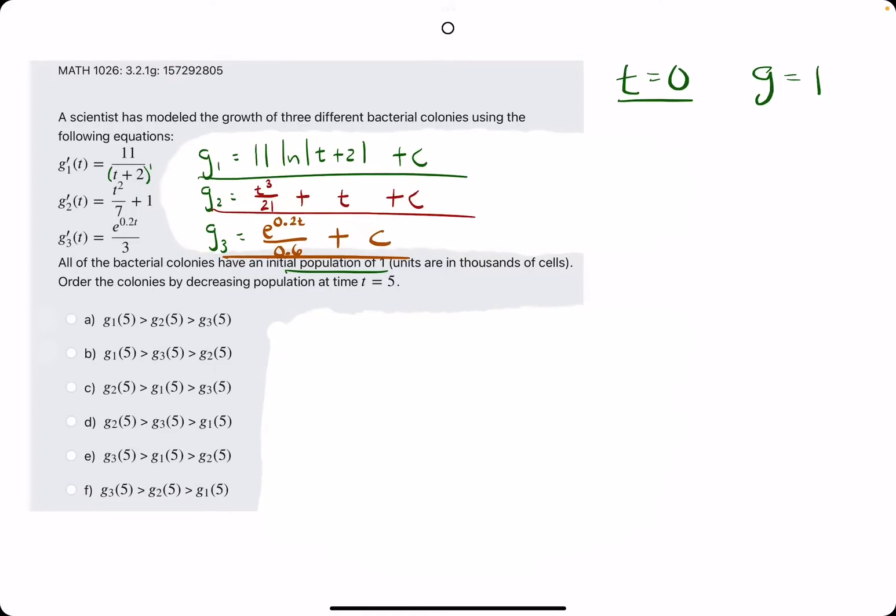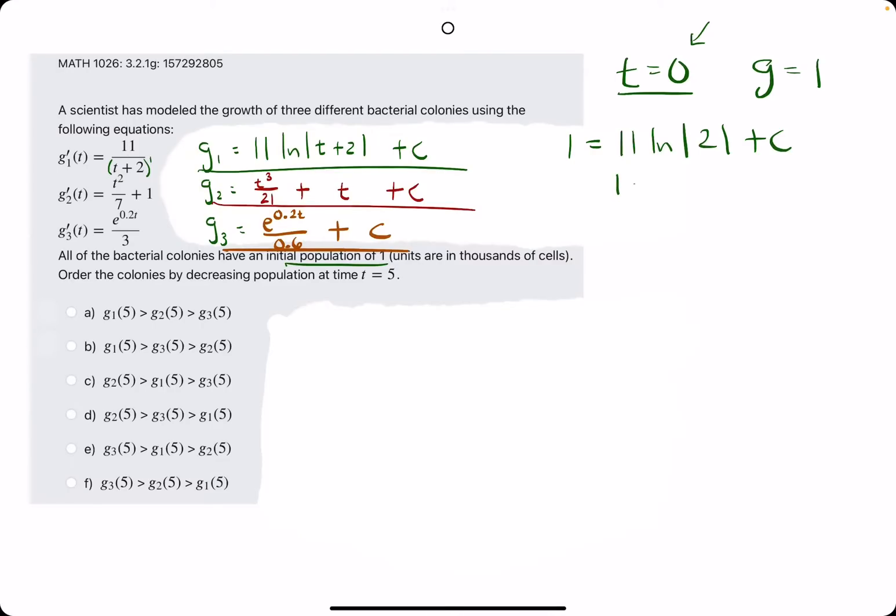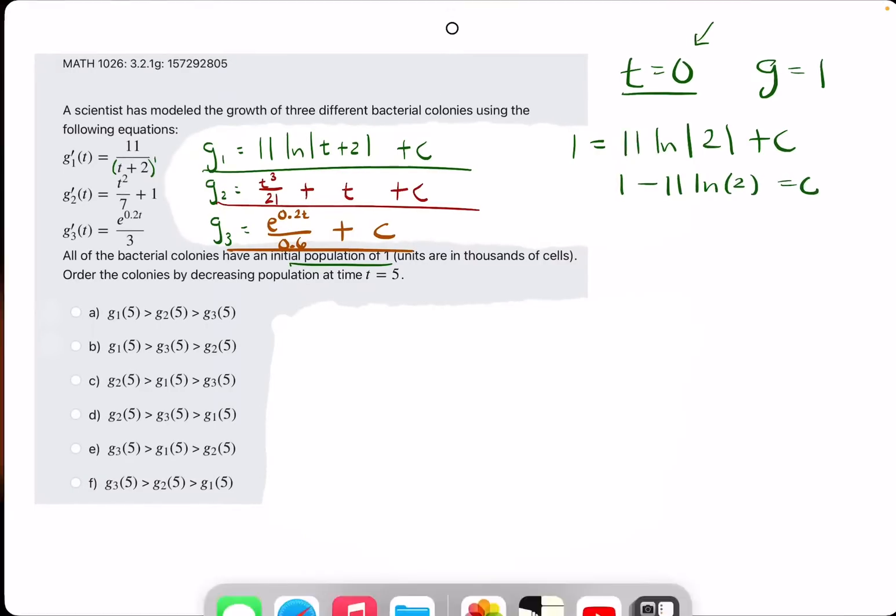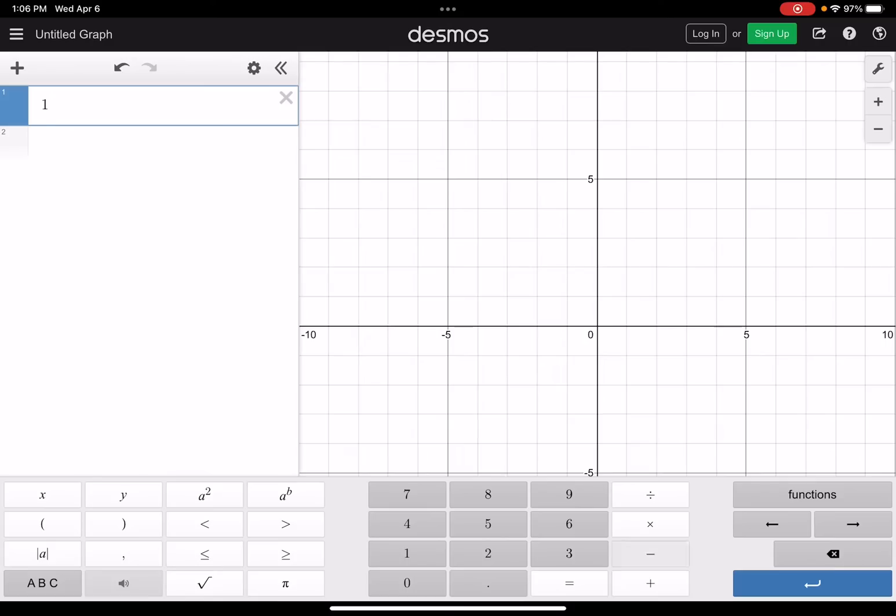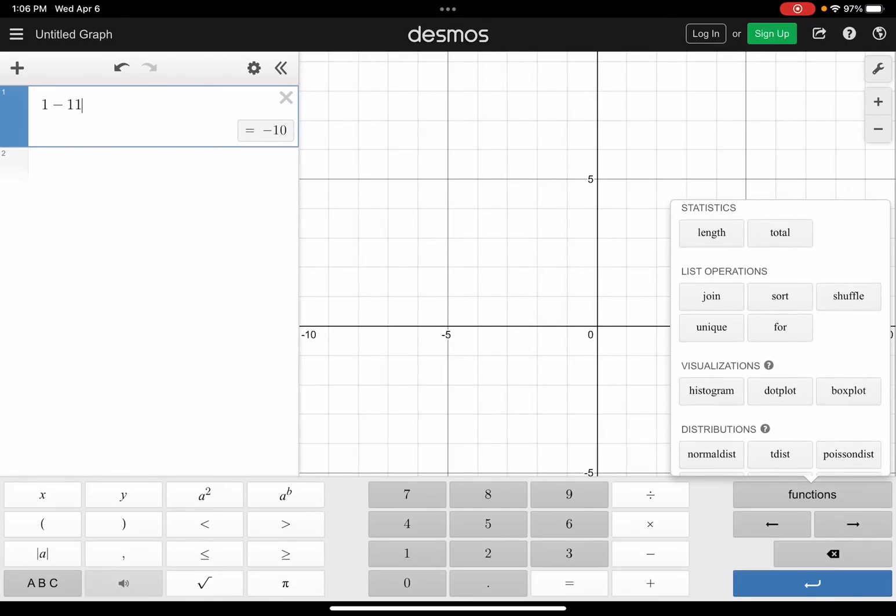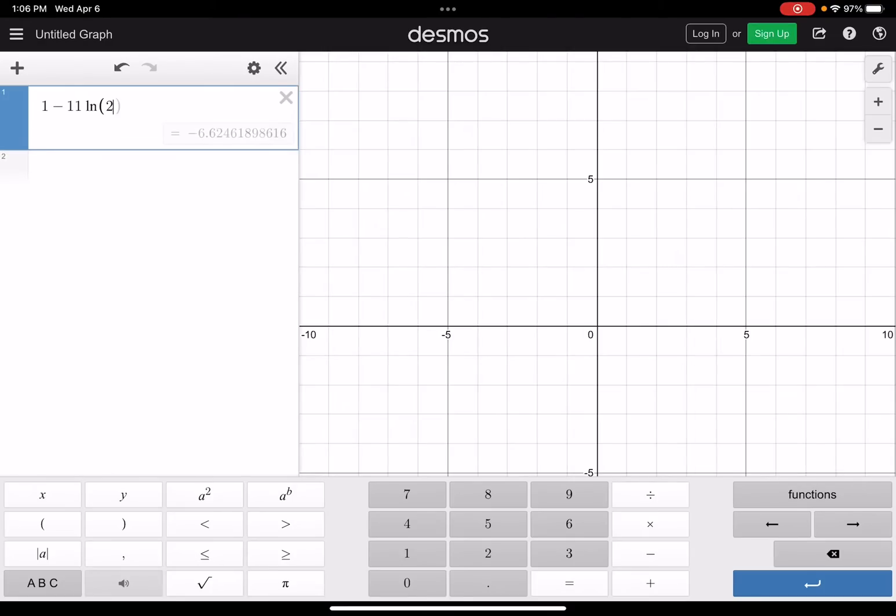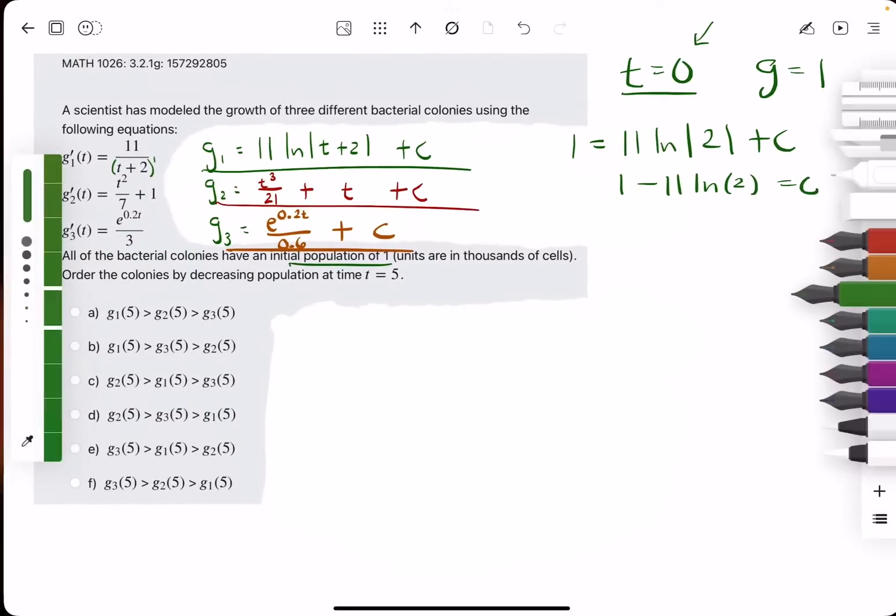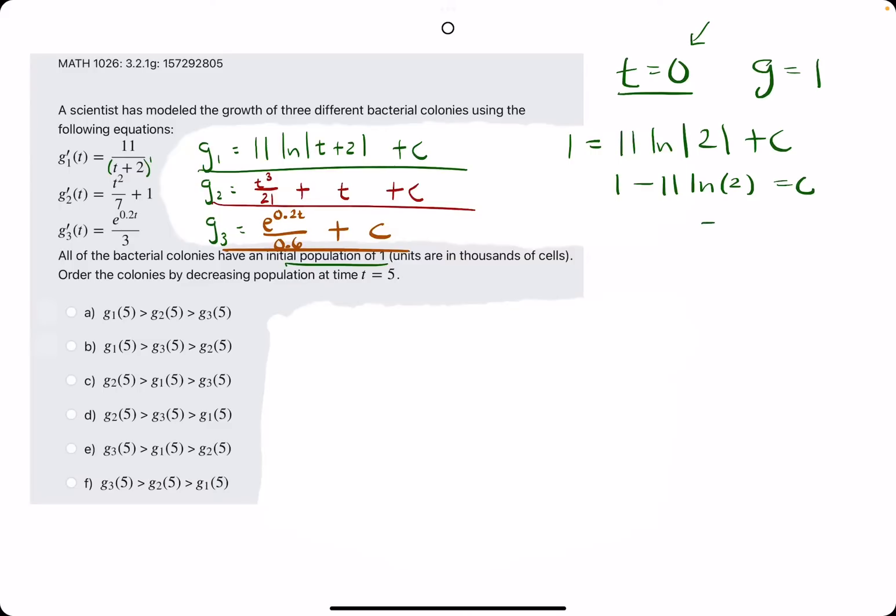For g1, g is equal to 1, and so c is equal to 1 minus 11 natural log of 2. We break out desmos. We calculate 1 minus 11 natural log of 2, and we get negative 6.6 approximately. So this is our c1, basically. I'll go ahead and plug that in here.